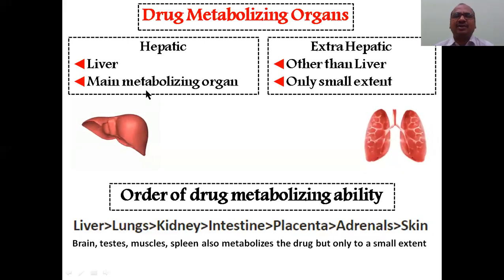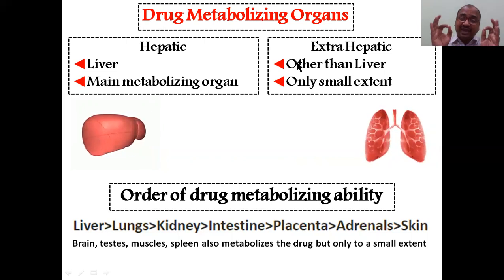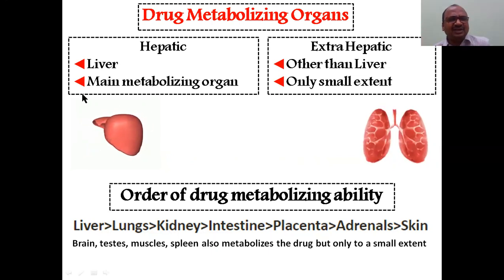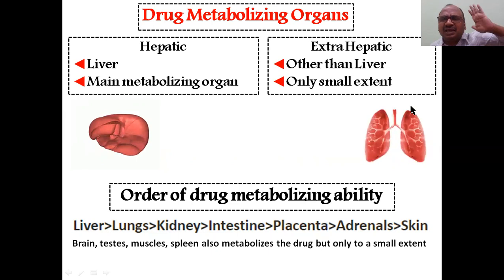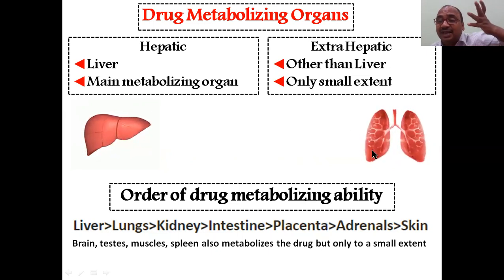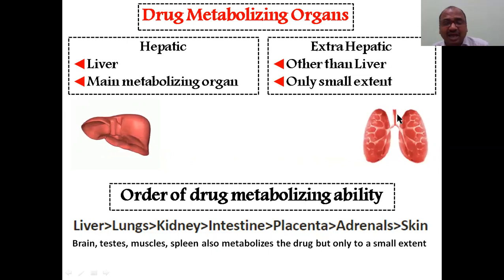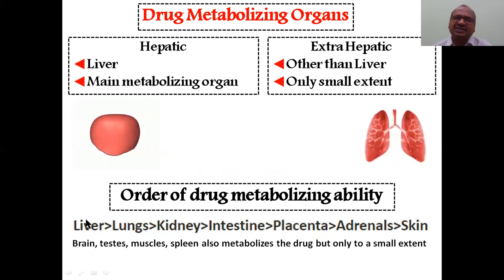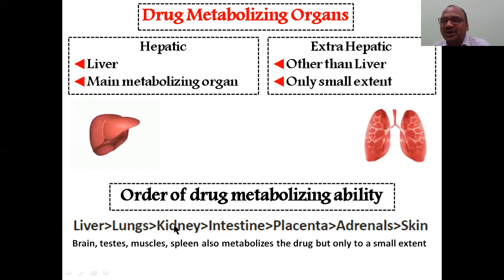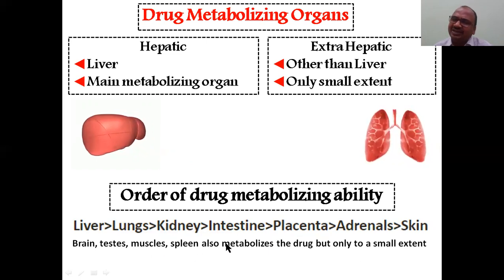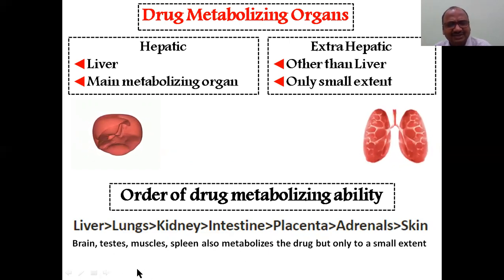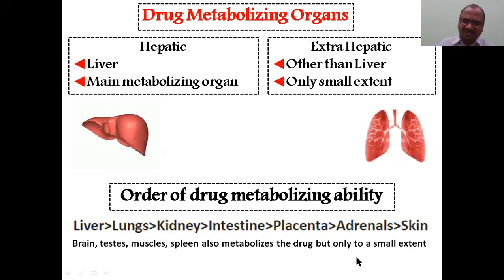Drug metabolizing organs: mainly 95% of drugs are metabolized in the liver — this is the main metabolizing organ. The remaining 5% is extra-hepatic metabolism, also called pulmonary metabolism (lungs). So the first importance is the liver, second is the lungs, and least importance is the skin. Other organs include kidneys, intestine, placenta, brain, testes, muscles, and spleen — biotransformation takes place in all these organs.